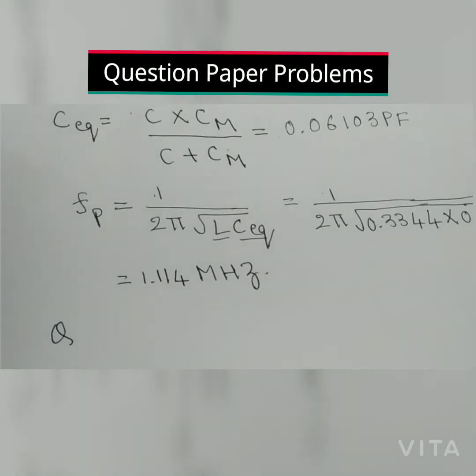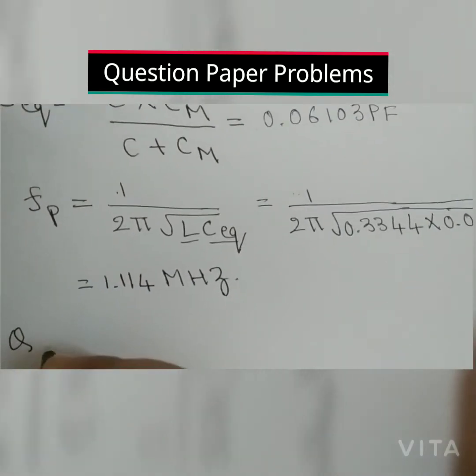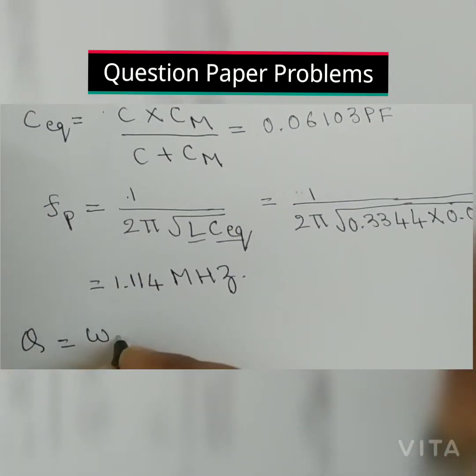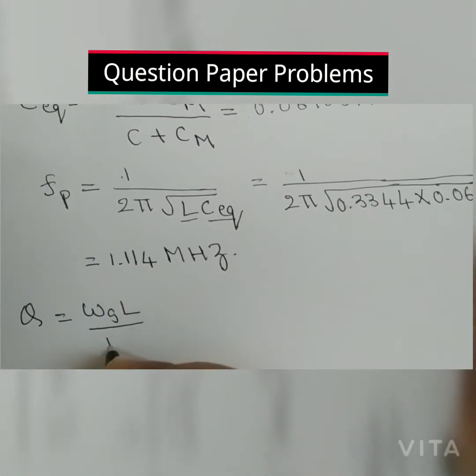What is the formula for Q? Q equals omega S times L divided by R.